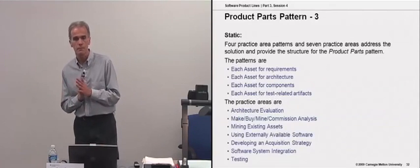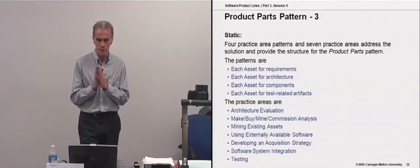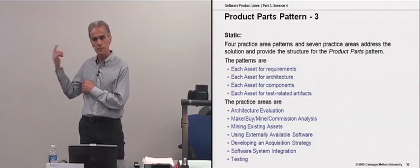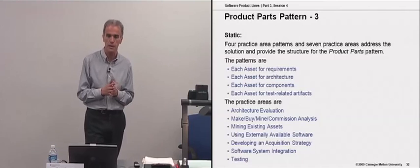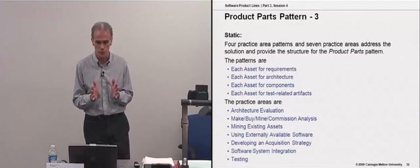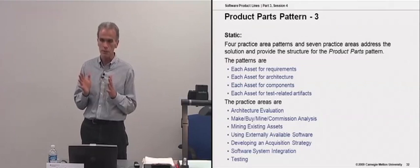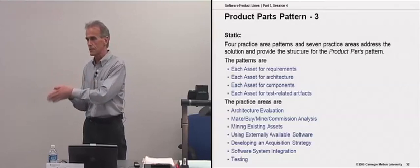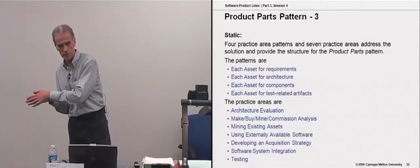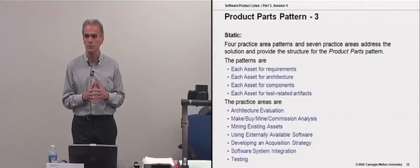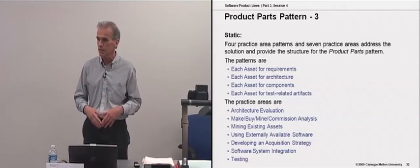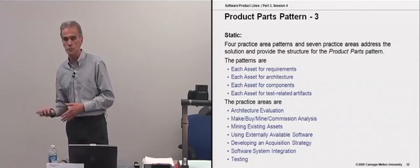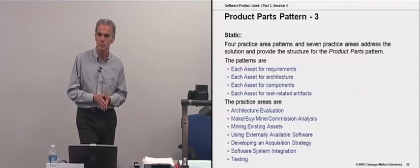So the practice areas in this pattern include the list shown here from architecture evaluation to testing, but this pattern also pulls in the each asset pattern for some of its work. So we want to create a set of reusable requirements that will become a core asset in building a particular product. So to create that reusable set of requirements, we enact the each asset pattern to bring in the tool support and the process discipline and the work plan and so on for creating those reusable requirements.